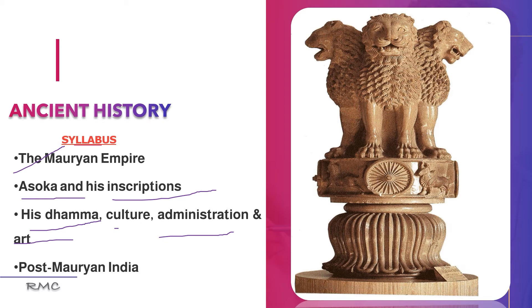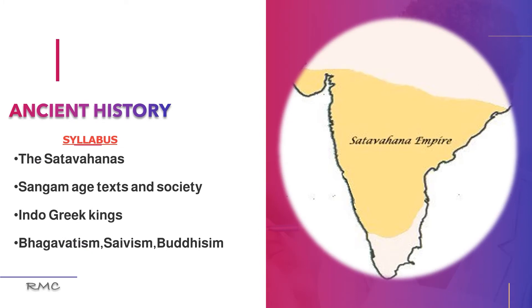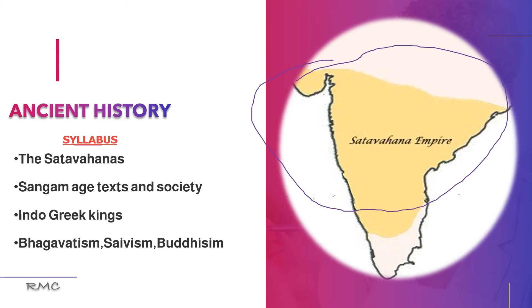After the decline of the Mauryan period, that is called post-Mauryan India. We will study which smaller kingdoms rose after the Mauryan decline. The Satavahana dynasty established a vast empire covering almost central and south India, with its capital at Amaravati in Andhra Pradesh — it was a very large empire.